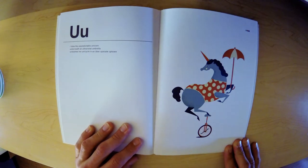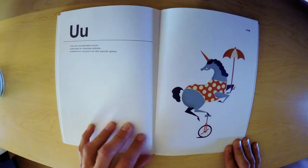U. Uma the unpredictable unicorn underneath an ultraviolet umbrella unleashes her unicycle in an uber upscale uptown.